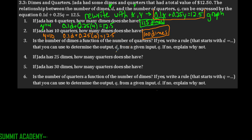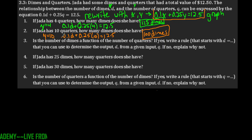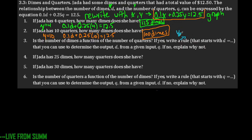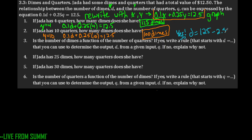Is the number of dimes a function of the number of quarters? Yes. We can write the rule as d equals 125 minus 2.5q. We rewrite the original equation with the output as d and the input as q.